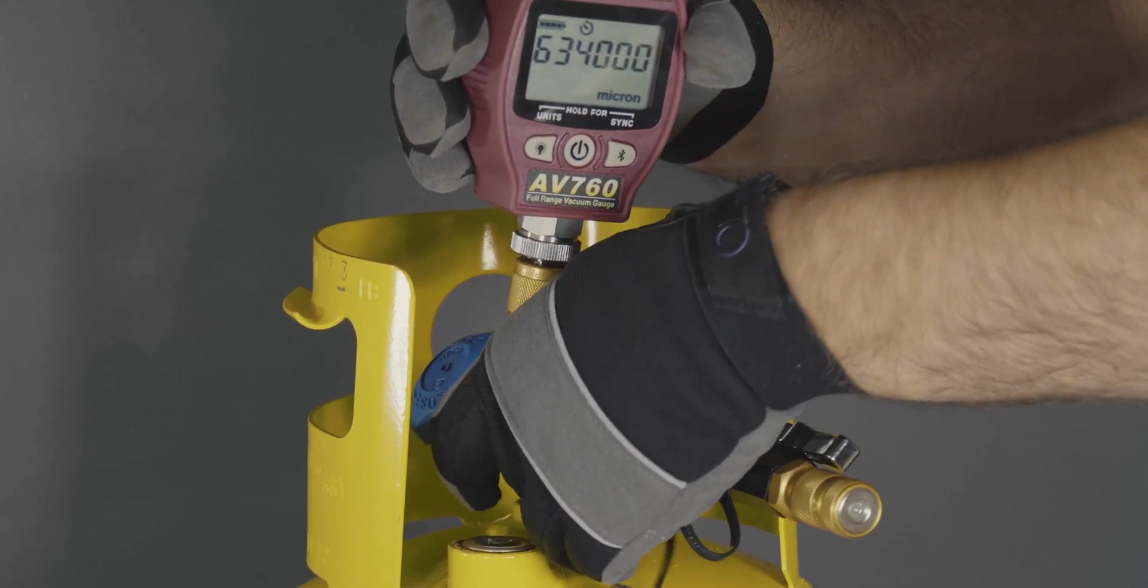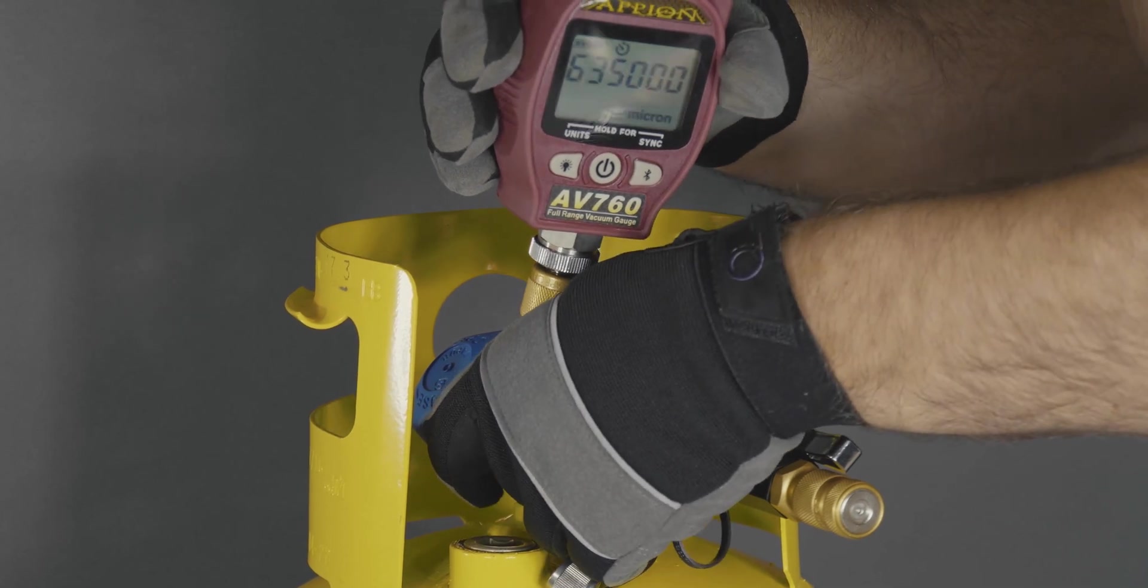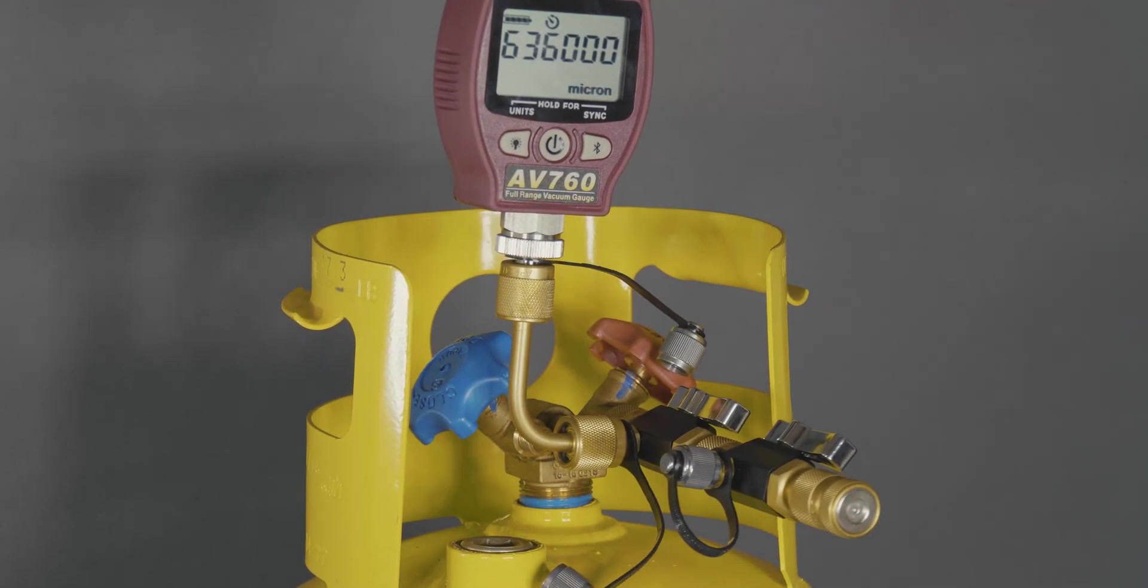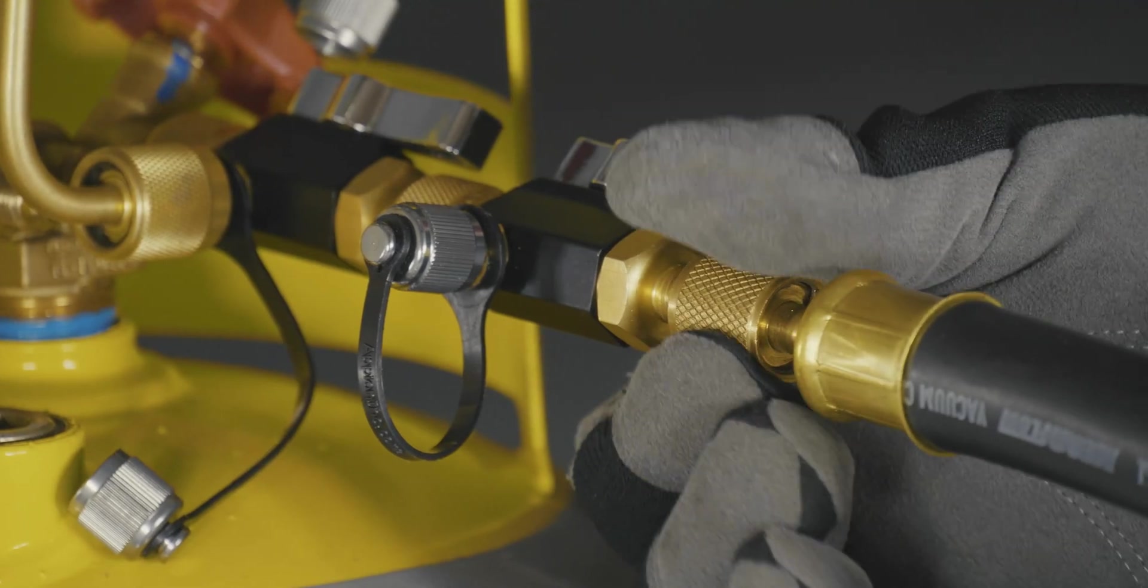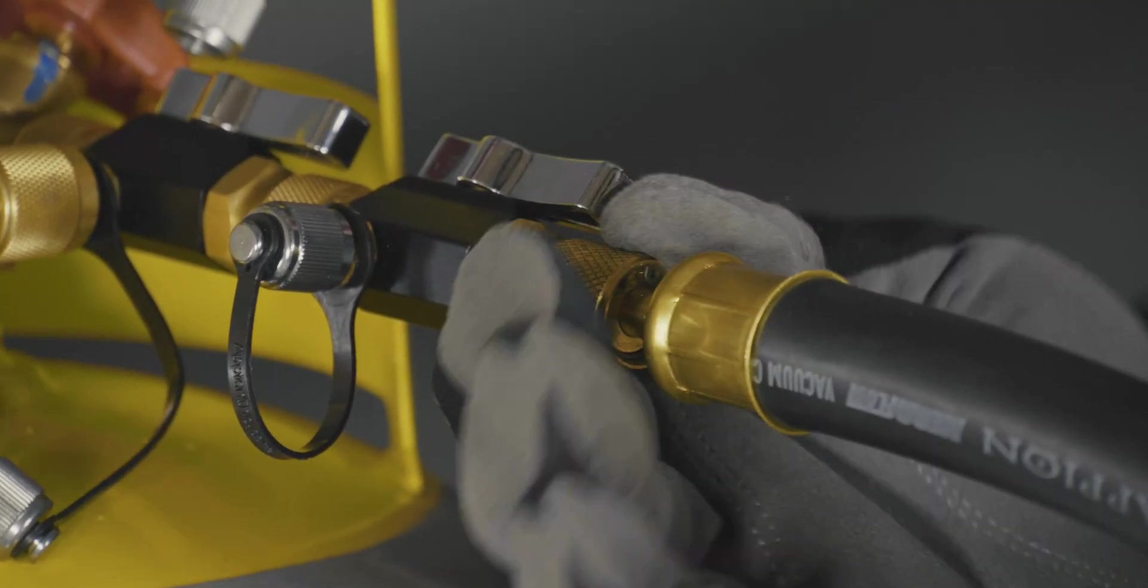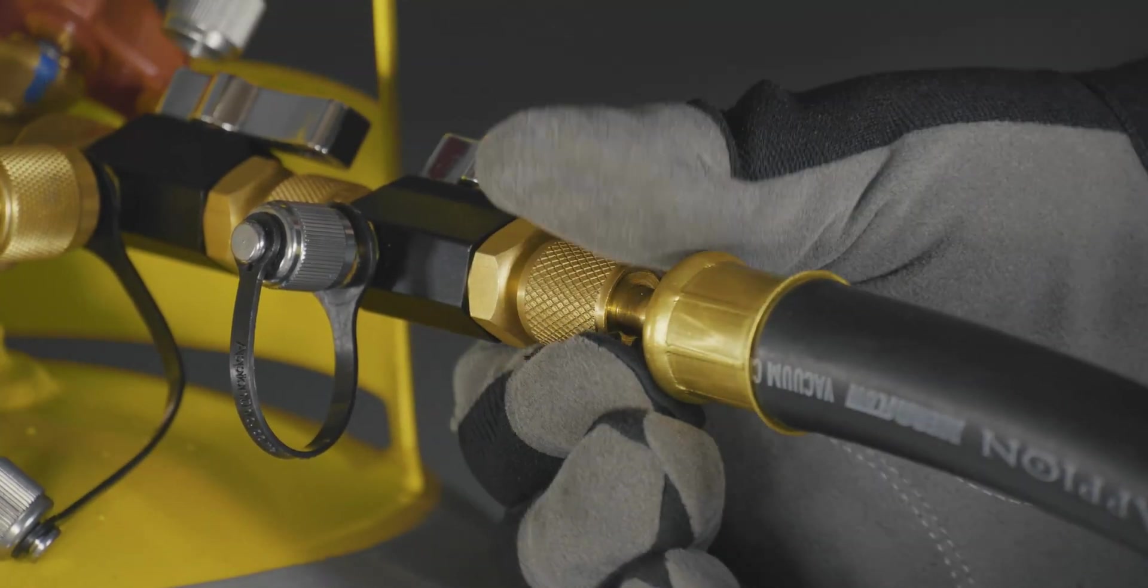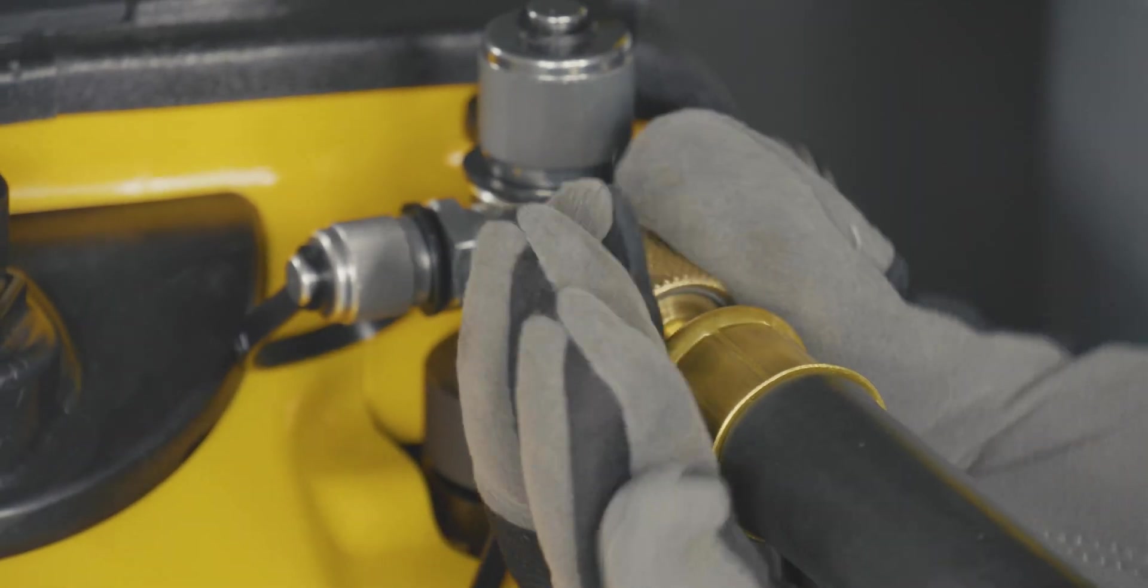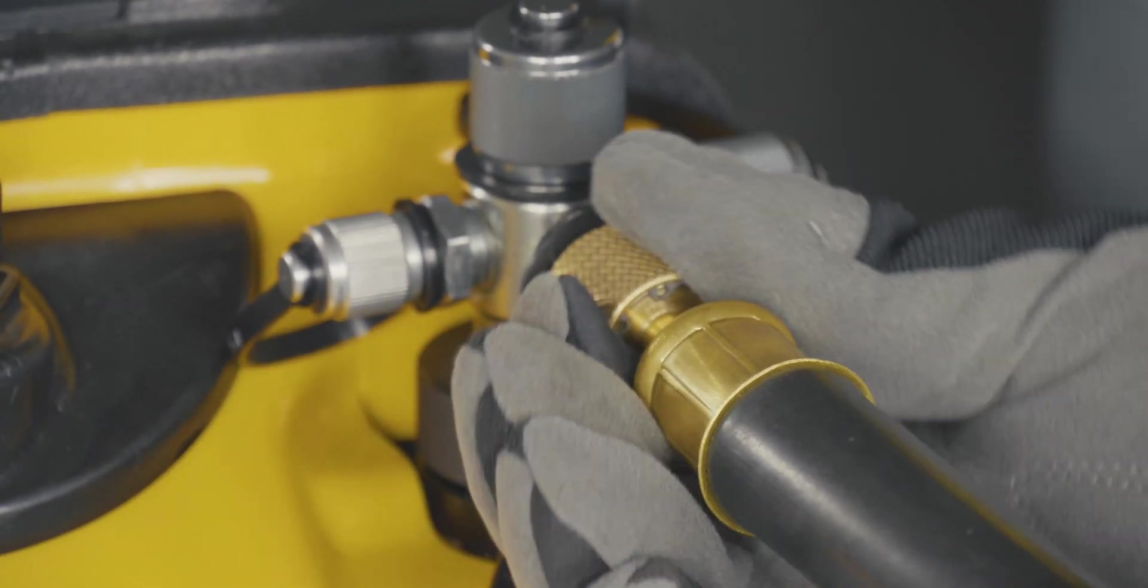Next, attach a known good micron gauge and angled fitting to the side access port of the test tool. Attach a known good vacuum hose to the open through port of the known good tool, then connect the other end of the hose to a vacuum pump.